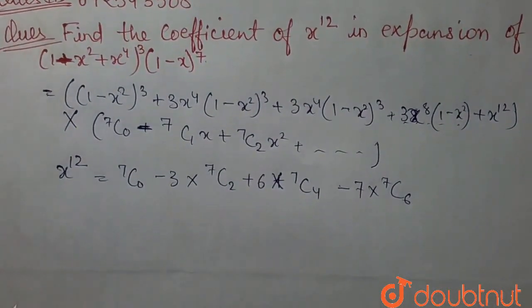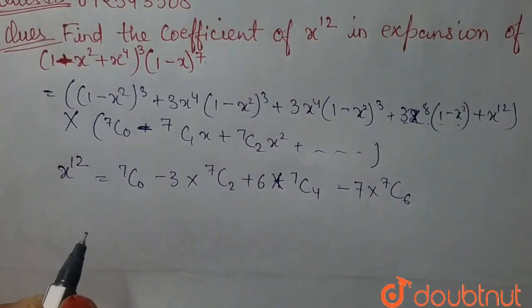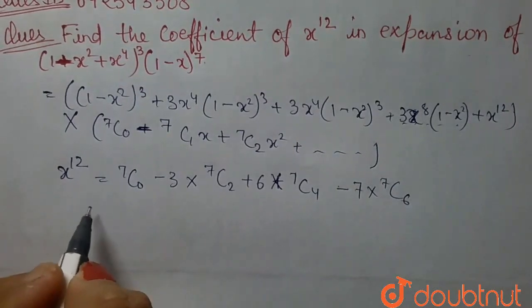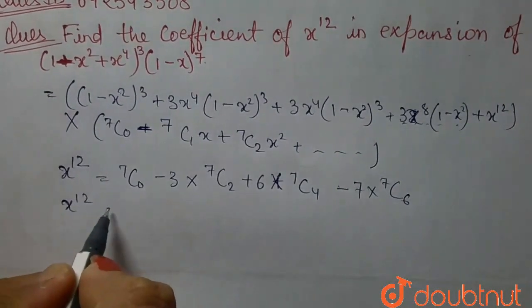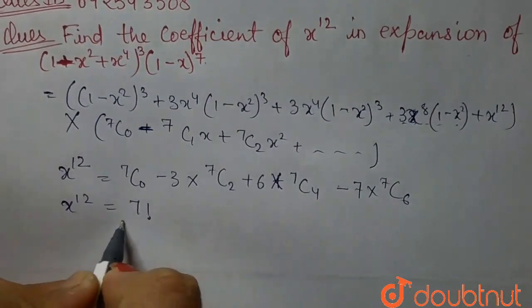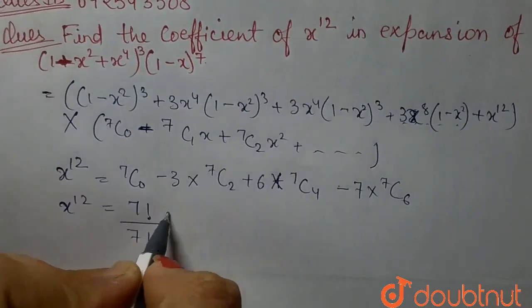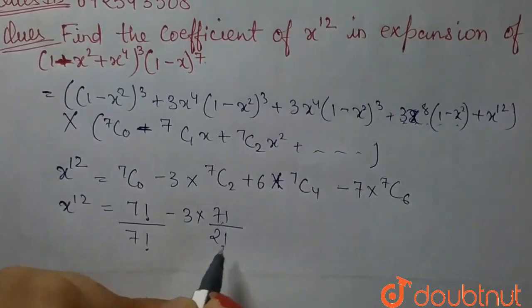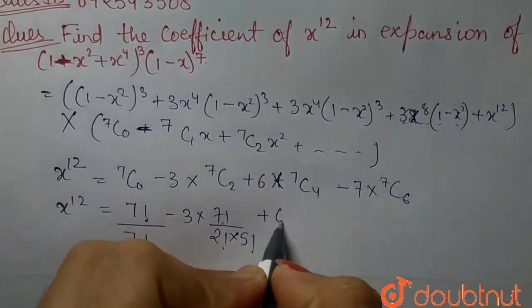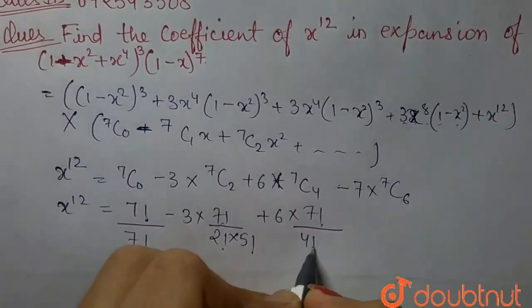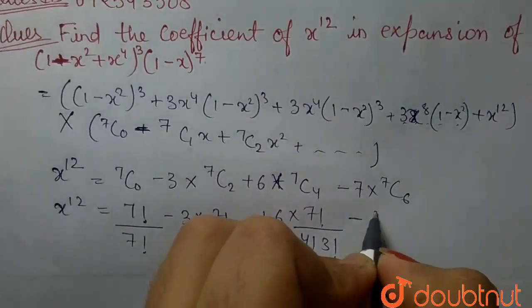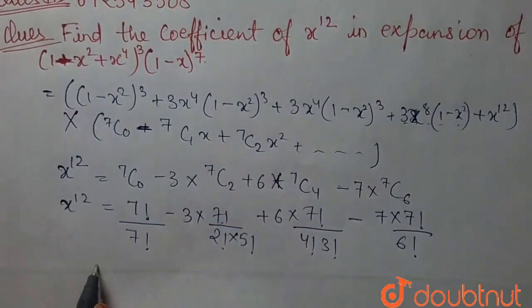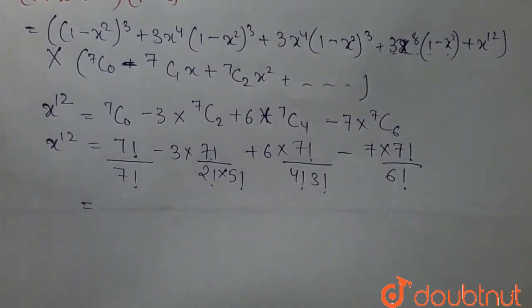So, we can put the combination formula which is n factorial over r factorial times n minus r factorial.